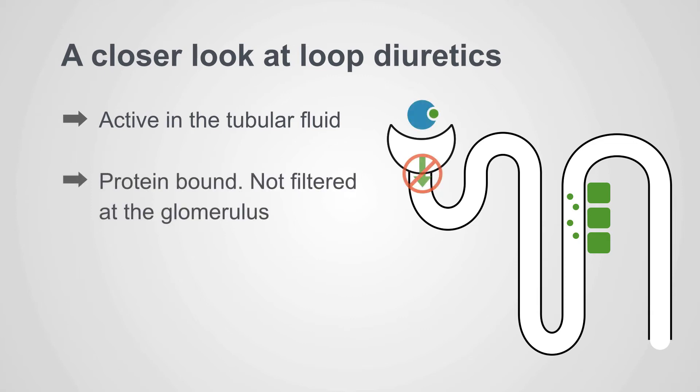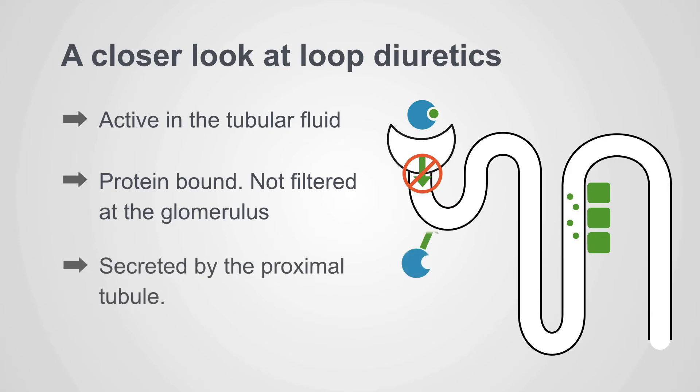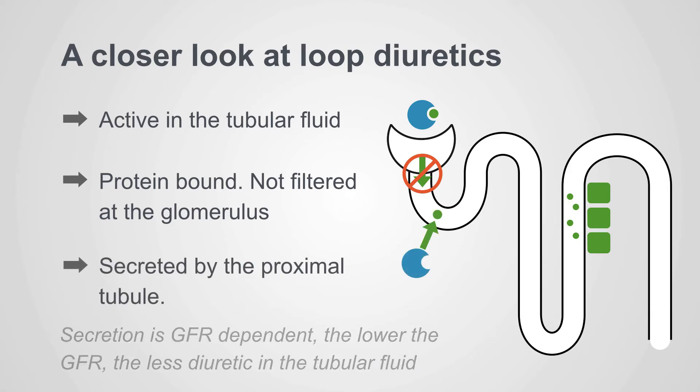Loop diuretics are highly protein-bound, and any molecule that's protein-bound can't be filtered at the glomerulus. So the way it enters the tubule is by secretion in the proximal tubule. That secretion is GFR-dependent — hence, the lower the GFR, the less diuretic that makes it to the tubule.